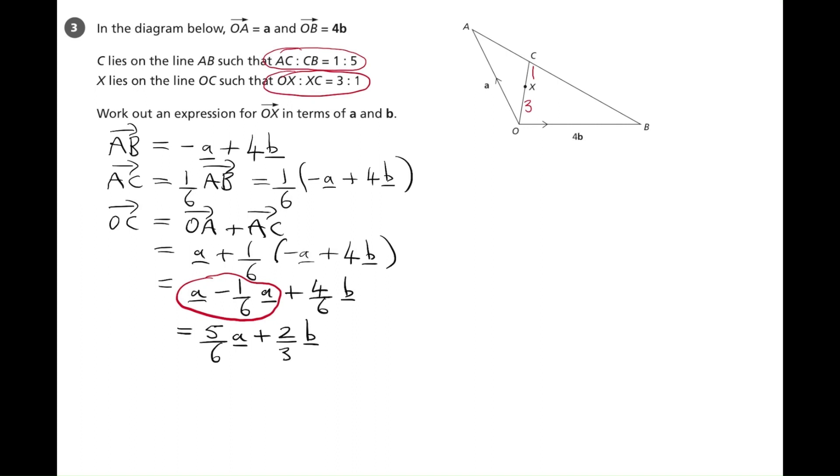So vector OX is equal to three quarters of vector OC. And we know vector OC, so that's three quarters of five over six a plus two thirds b. So that's going to be vector OX. We just need to simplify this now.